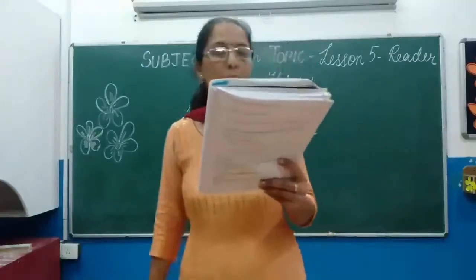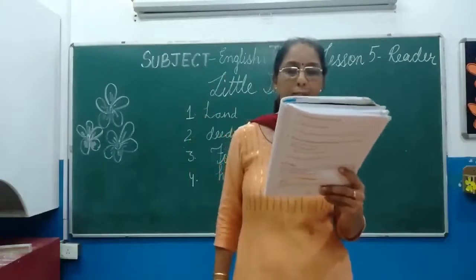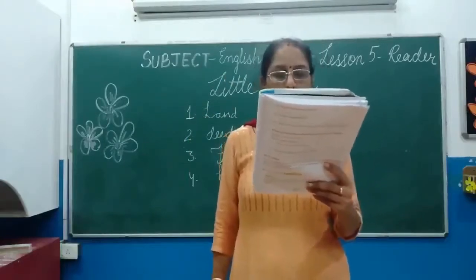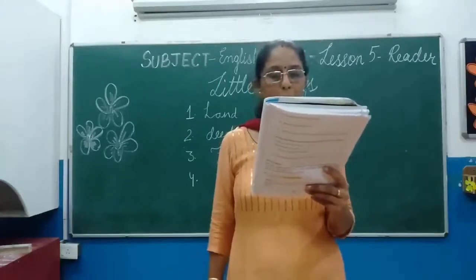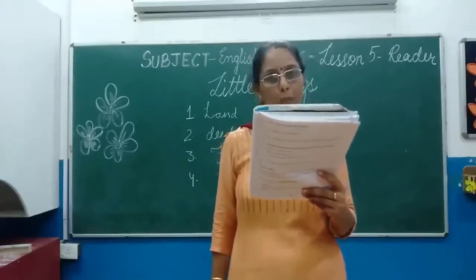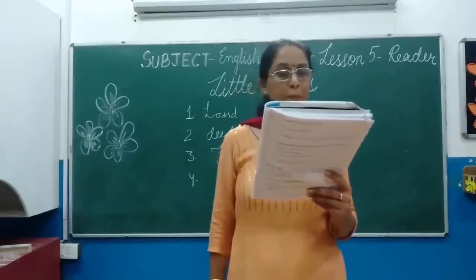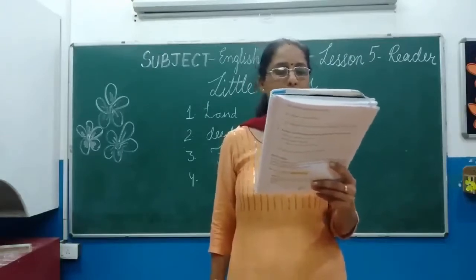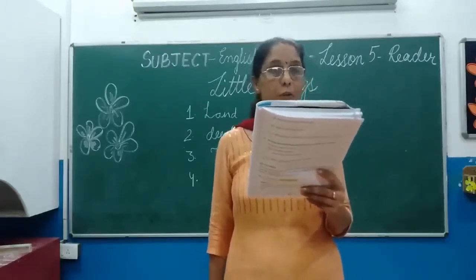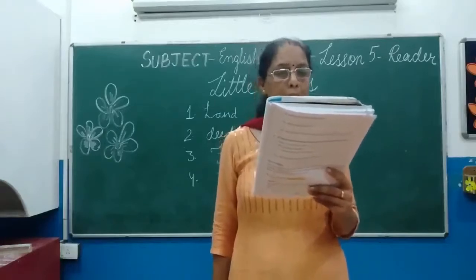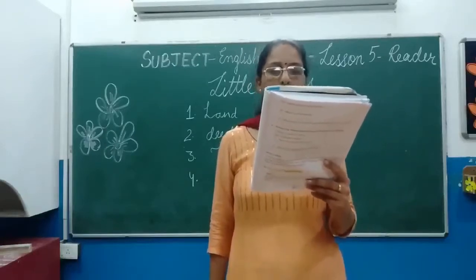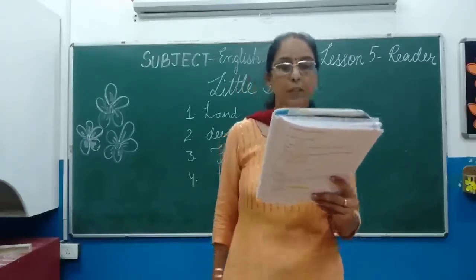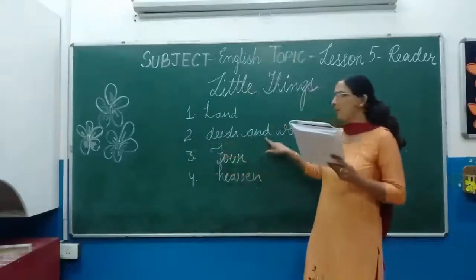Next one: 'Little dash of kindness and little dash of love make our world.' Here are blanks to fill. The options are: deeds and words, words and deeds, deeds and dreams. You've read the poem, so you should know the answer. 'Little deeds of kindness and little words of love make our world.' So the answer is deeds and words.